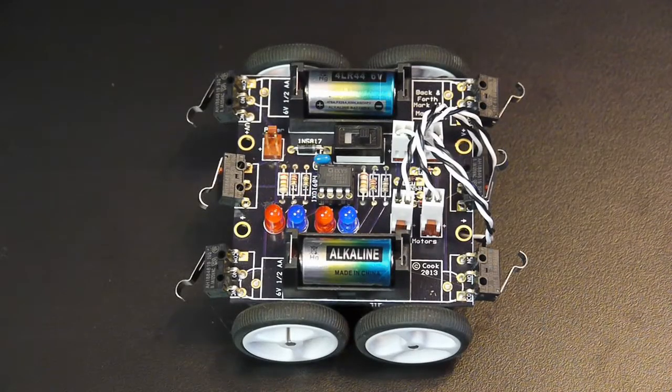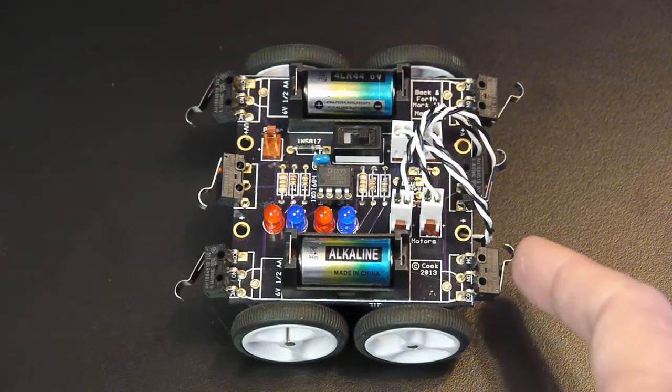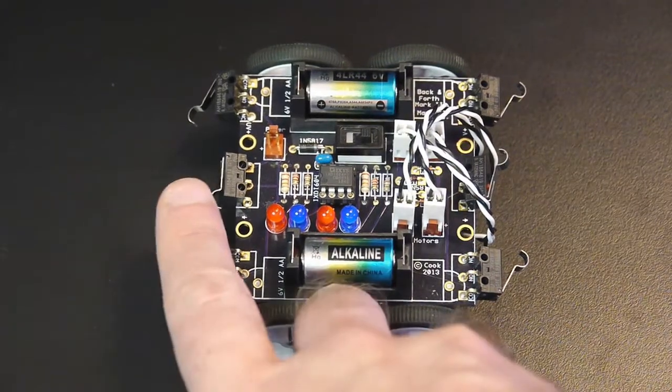This is the back-and-forth robot Mark II. It has three obstacle-detecting switches at the back and three obstacle-detecting switches at the front.